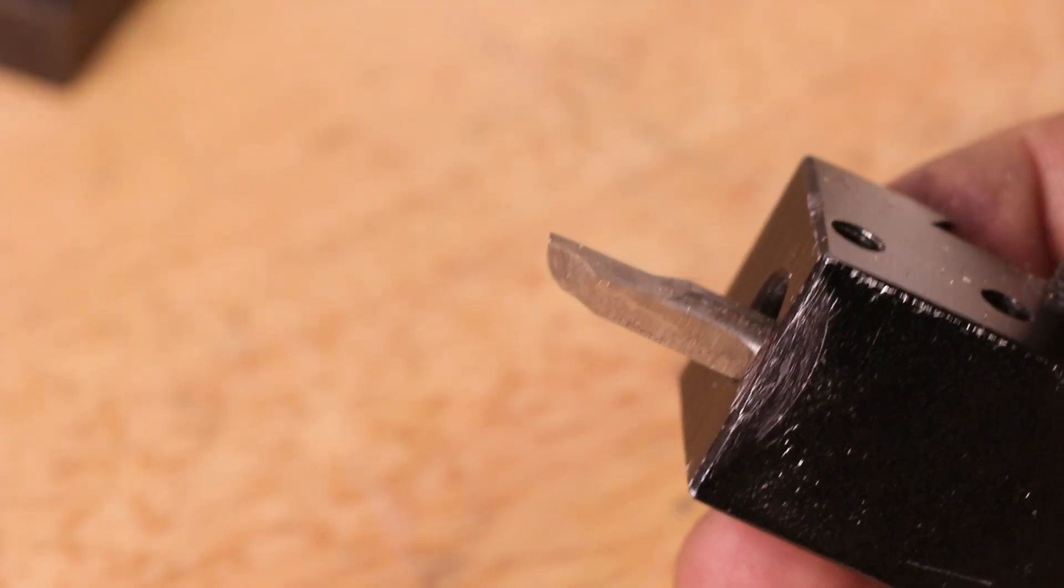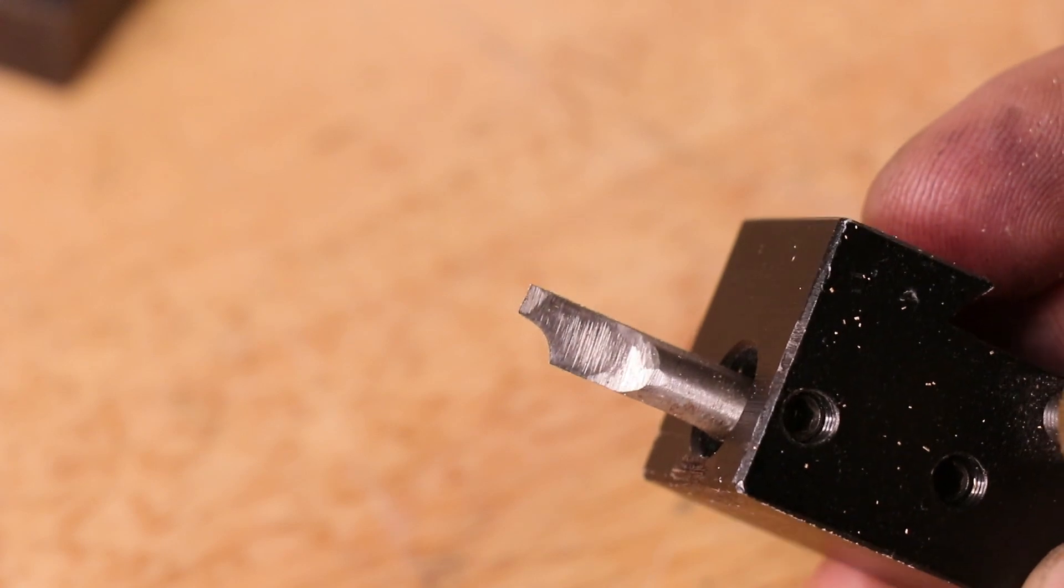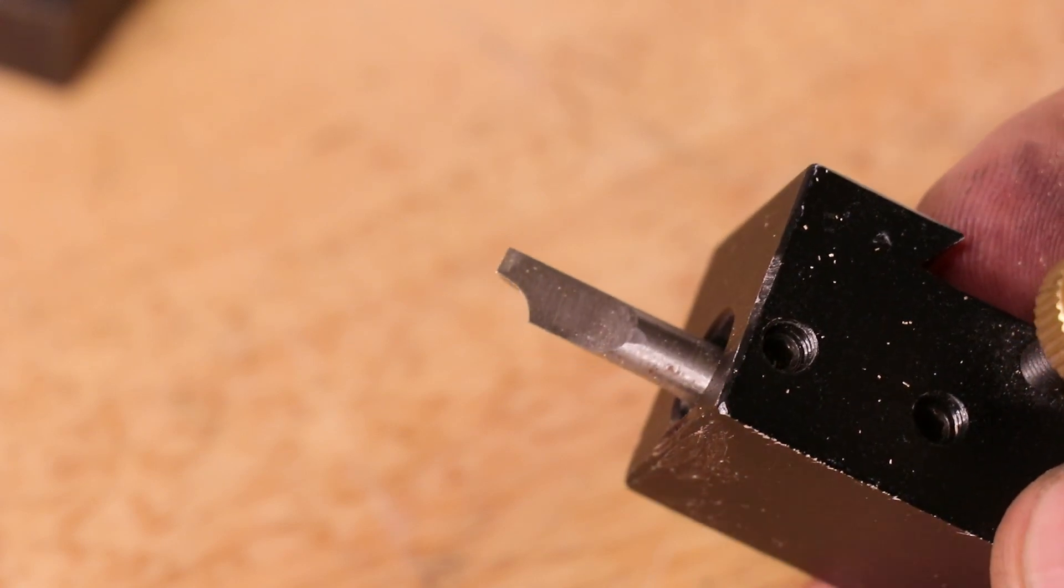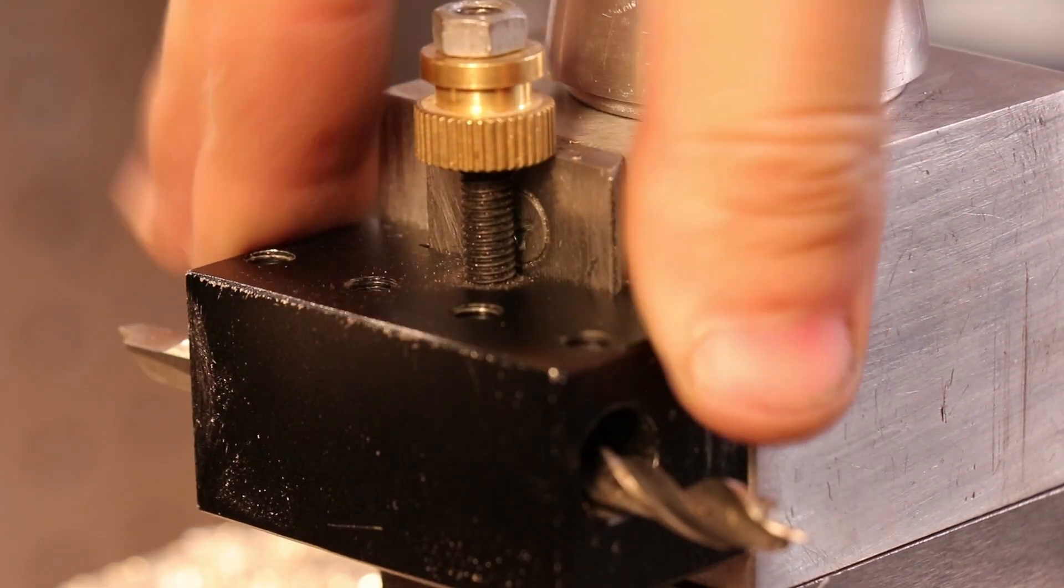Finally, a few extra tools that I've made over the past year. Probably the simplest one here was the form tool for putting a small radius on brass parts. The radius isn't hugely accurate, though it really doesn't need to be.